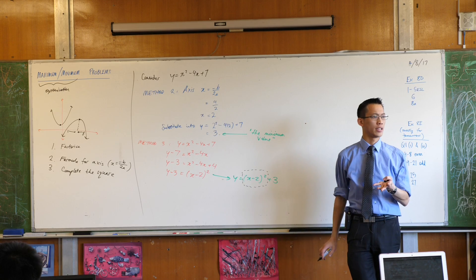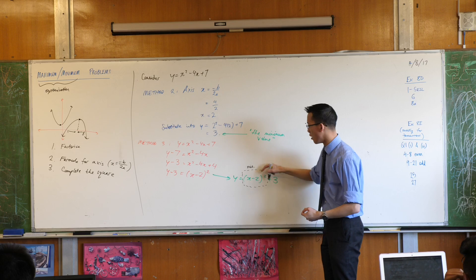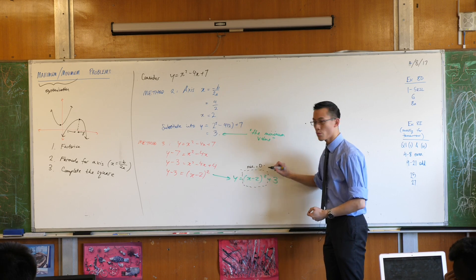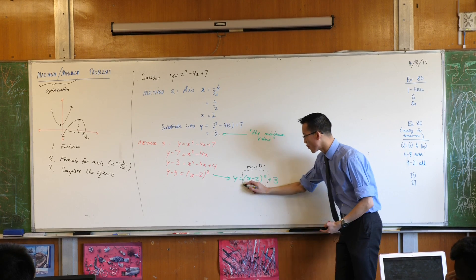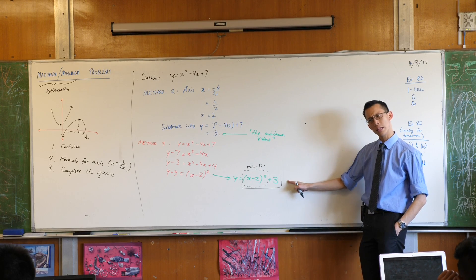Right? A square can never be negative. Do you agree? At least with the numbers that we deal with. Okay, so therefore the minimum of this is 0. So the minimum of the whole thing is 0 plus 3. Do you see that?